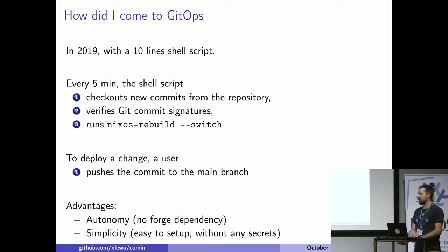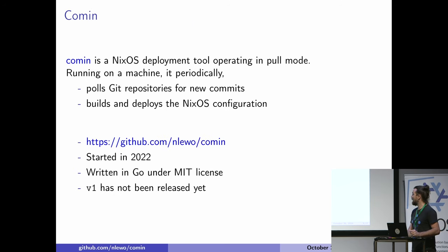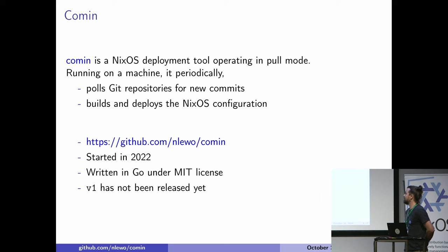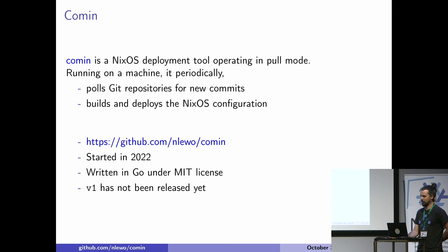This has been working really well for several years. And then I started to think if I could use this paradigm for all my machines, including laptops. But on my laptops, I don't want to have to wait five minutes, and I don't want to have to push to master to test a change. This is why I started to work on Comin. Comin is a NixOS deployment tool operating in pull mode. It's currently hosted on GitHub, I started it two years ago, and please note that V1 has not been released yet. But I'm using it on six or seven of my own machines for more than a year.